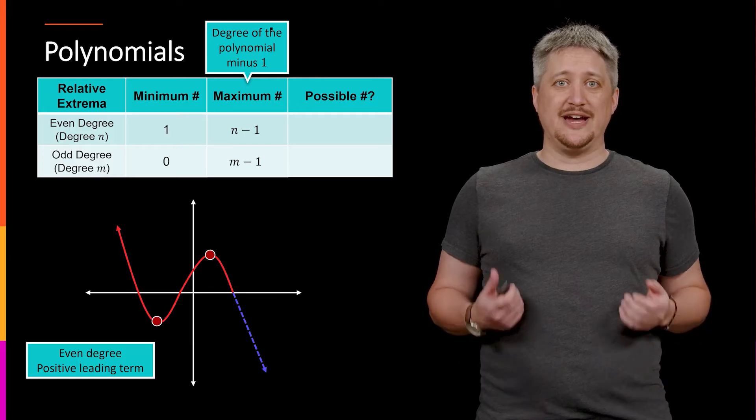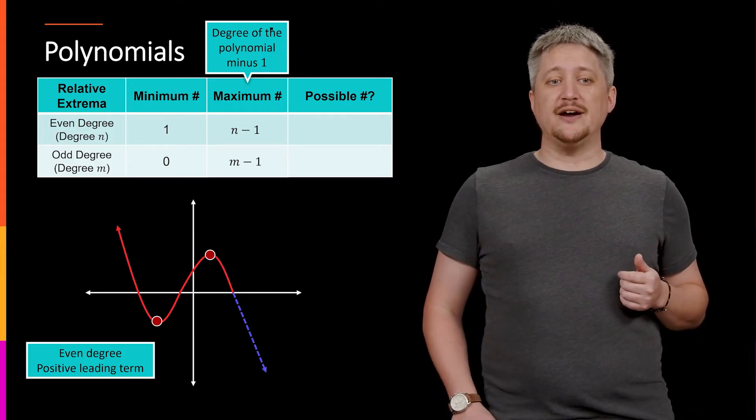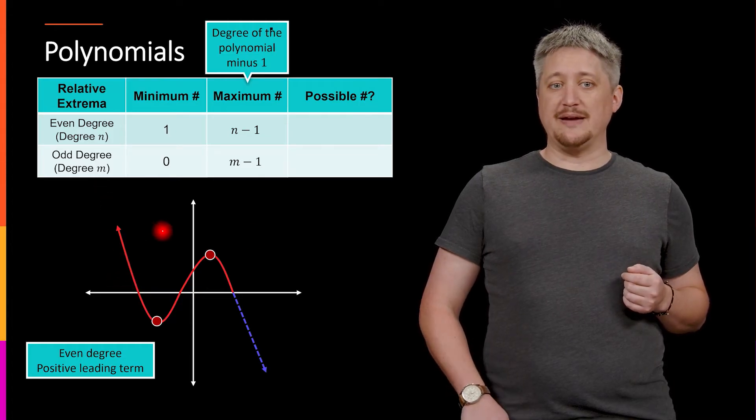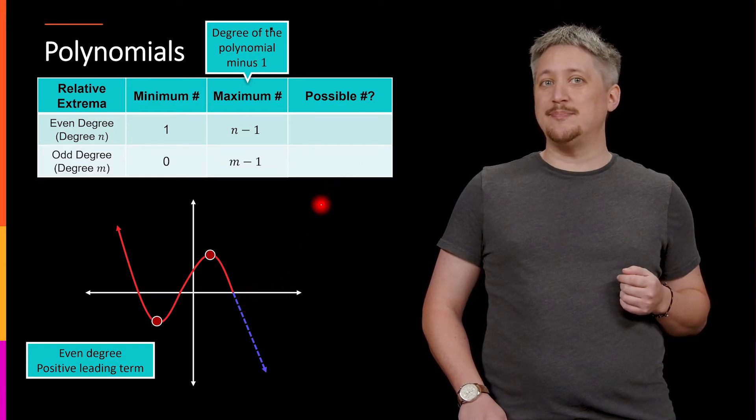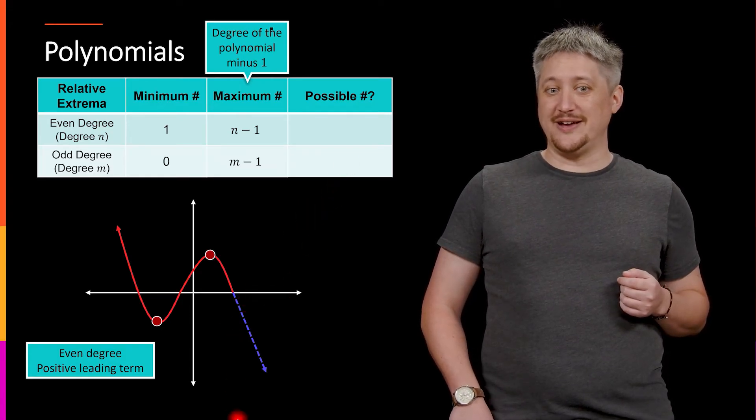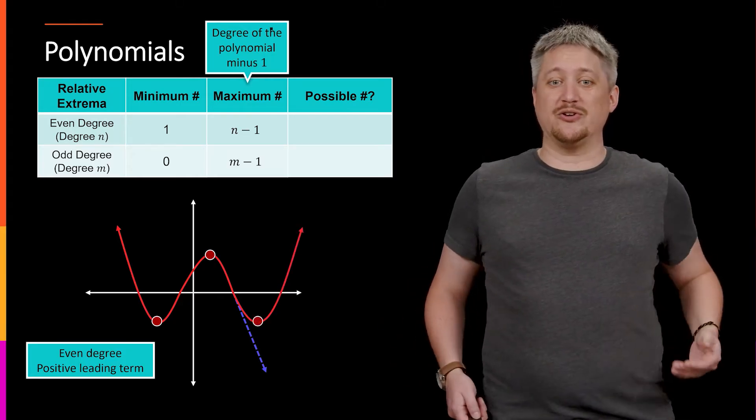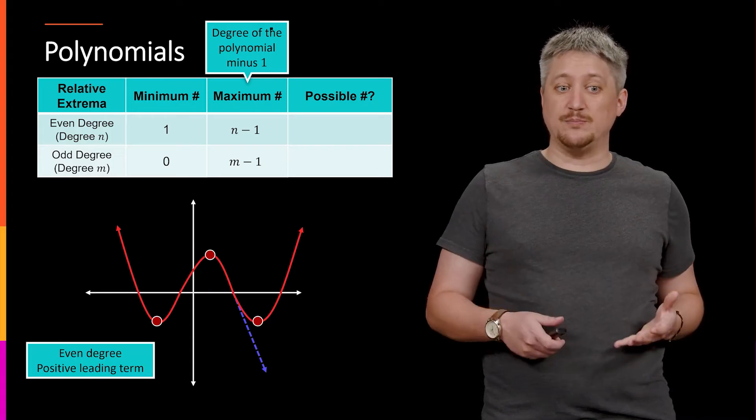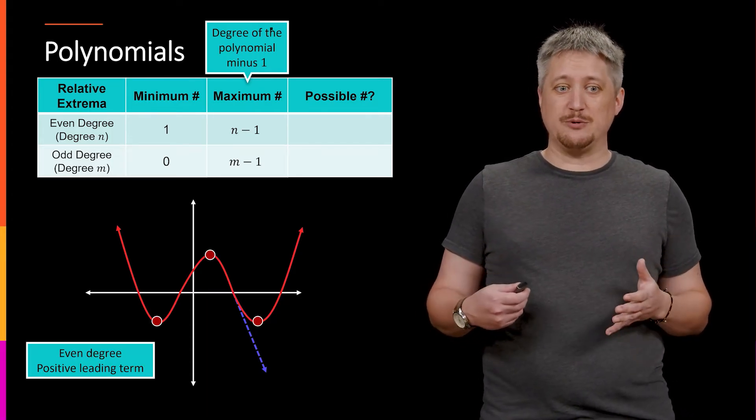Even degree polynomials have to have the end points go in the same direction. So since I started out as the even degree one going up, that means that the other side has to also go up at the end. It can't go down,